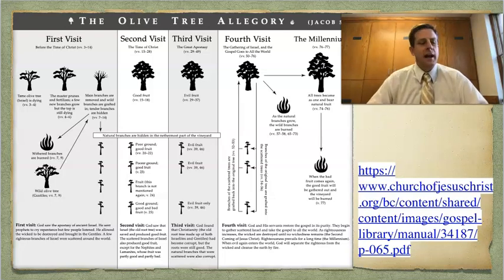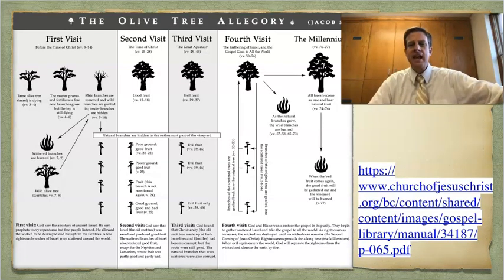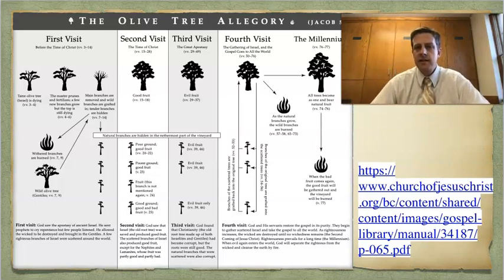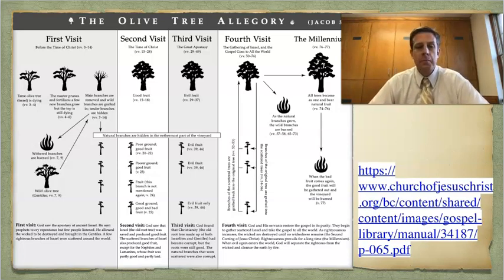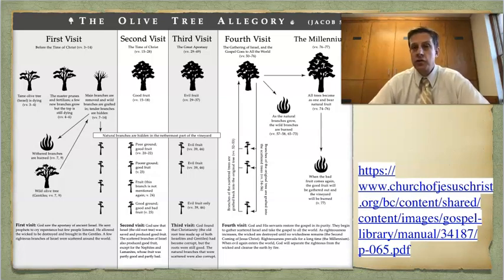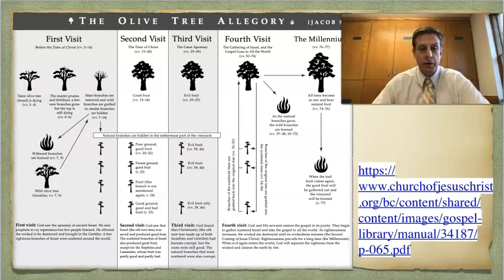There's also, every year when they print the Ensign for the year that they're discussing the Book of Mormon, so every four years or so, there's usually some charts. In March of 2020, on page 45, there is a page about what can we learn from the allegory of the olive tree. Also another piece of helpful information for you.